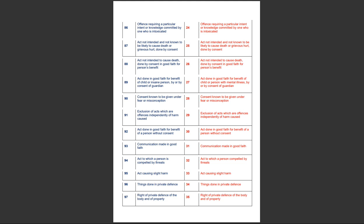Section 92 of the Indian Penal Code deals with an act done in good faith for the benefit of a person without consent. Section 93 of the Indian Penal Code deals with communication made in good faith, whereas section 31 of the BNS deals with communication made in good faith. Section 94 of the Indian Penal Code deals with an act to which a person is compelled by threats, whereas section 32 of the BNS deals with an act to which a person is compelled by threats. Section 95 of the IPC deals with an act causing slight harm, whereas section 33 of the BNS deals with act causing slight harm.